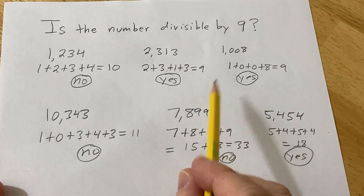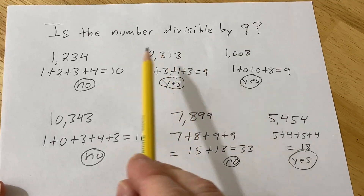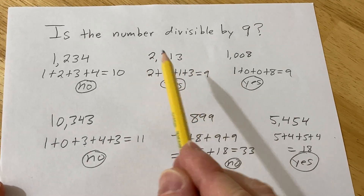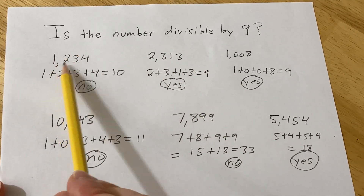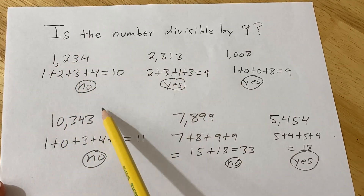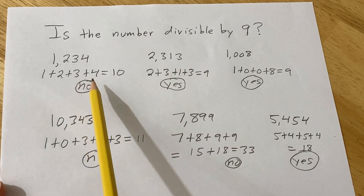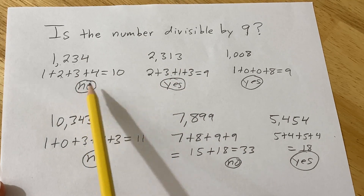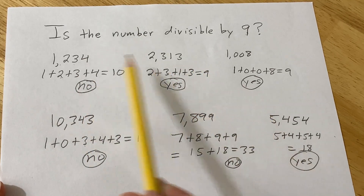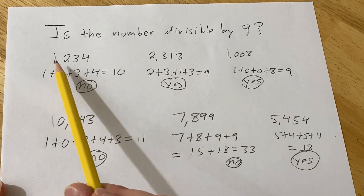So it's pretty simple. In order to determine if a number is divisible by 9, all you do is add up the digits. If the sum of the digits is divisible by 9, then the original number is too.